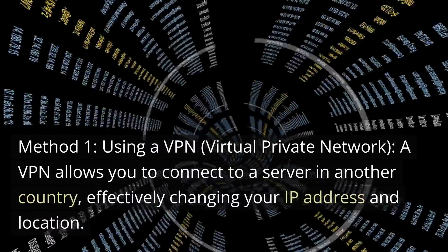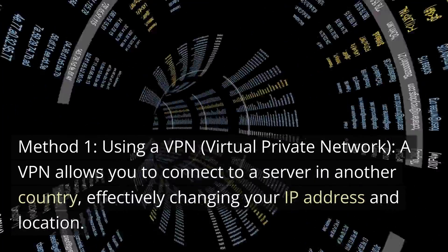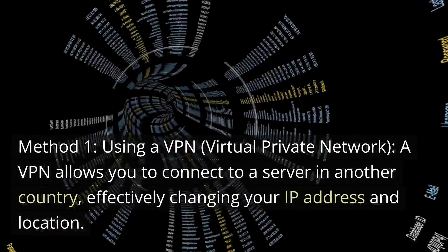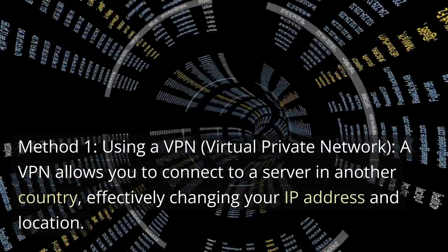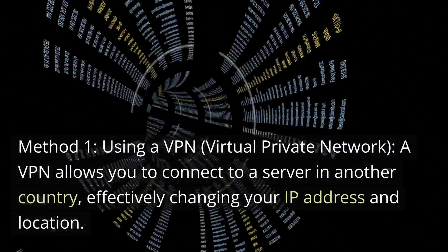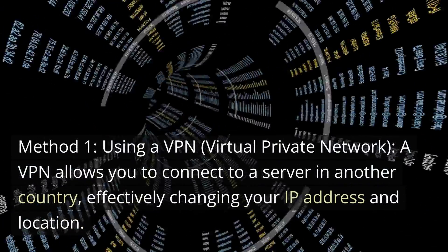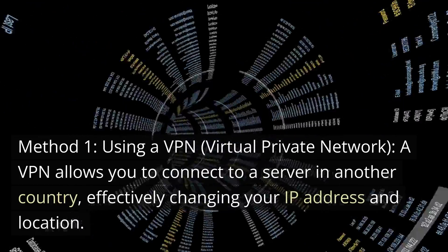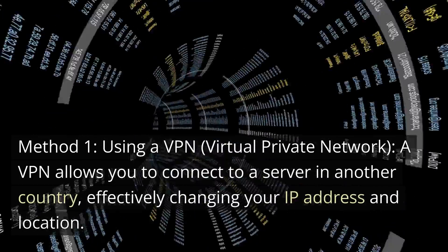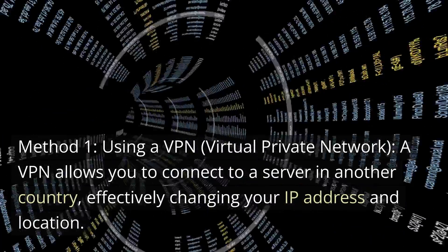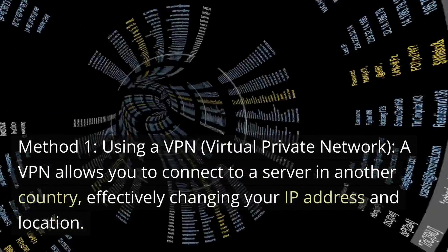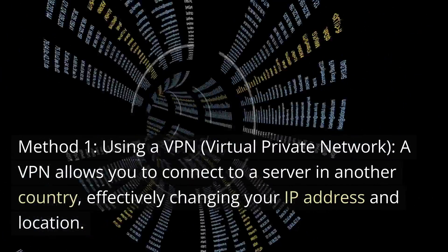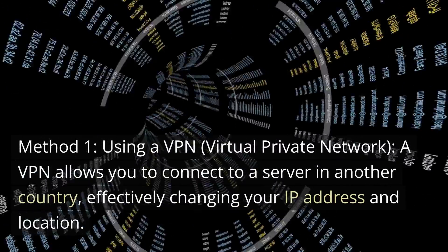The first method to connecting yourself to ChatGPT would be using a VPN, a virtual private network. A VPN would allow you to connect to a server in another country, thereby effectively changing your IP address and consequently your location.